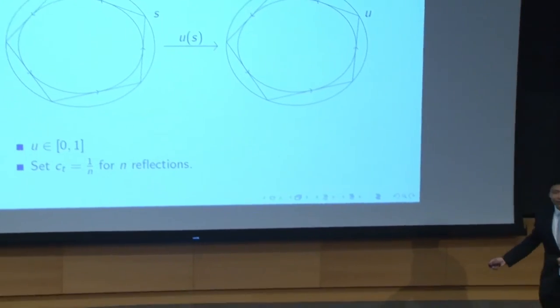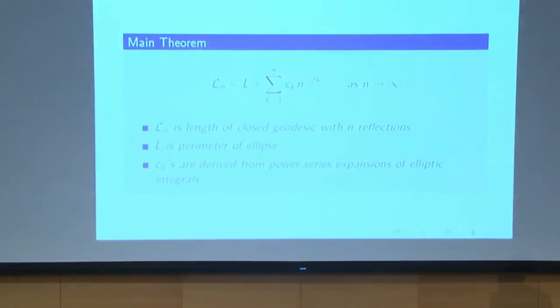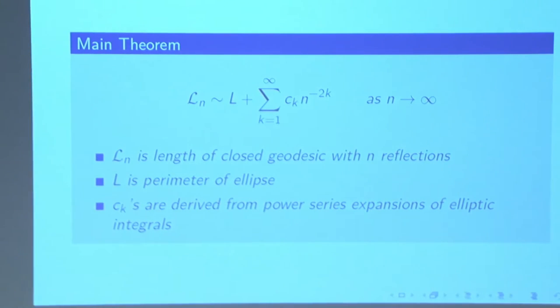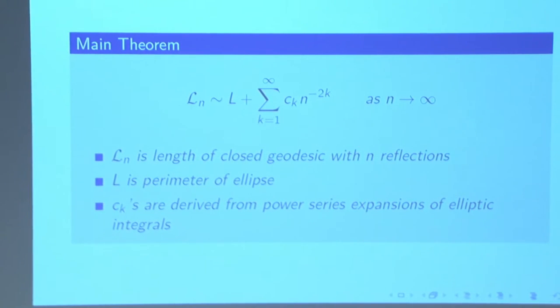And so now we have our main theorem. So if I could please have a drum roll. Here's our main theorem, which is explicit calculation for the length of our closed geodesic on our ellipse. And so what we have here is l_n, the length of our closed geodesic, is asymptotically equivalent to the perimeter of our ellipse, plus this sum that has these coefficients c_k that are some nasty expression. And the idea is that these c_ks encode all the information in the length spectrum that we can get from the eigenvalue spectrum.